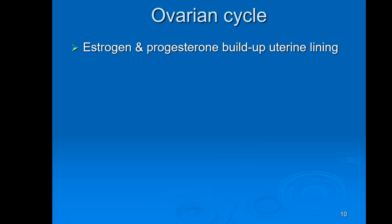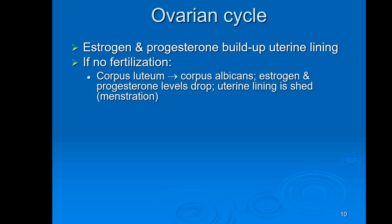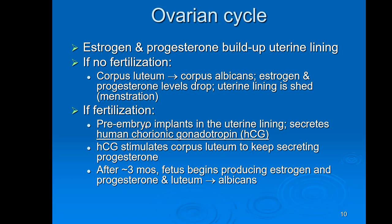Estrogen and progesterone are really important because they help build up the lining of the uterus, which is where the embryo will start developing. If no fertilization takes place, the corpus luteum breaks down into the corpus albicans. Without the corpus luteum, progesterone levels drop, and because progesterone is critical for maintaining the uterine lining, that lining will come off — and that is what's known as menstruation.